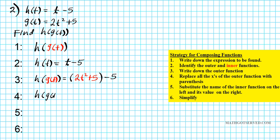So h of g of t is going to be 2t squared plus 5 minus 5. Imagine there is a 1 in front of the parenthesis. When you distribute the 1 to both terms, you just drop off the parenthesis. Now we can combine 5 and negative 5 — that drops off. So h of g of t equals 2t squared, and that is your final answer.